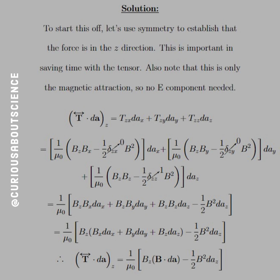For each component, we have B_z B_x minus one-half delta_zx B-squared times dA_x. Because of the Kronecker delta, that second term cancels since z ≠ x. So all we have are the fields in the z and x components working together. Similarly for the y term, the delta cancels the B-squared term, leaving just B_z B_y dA_y.